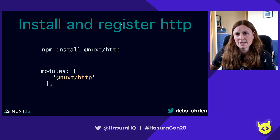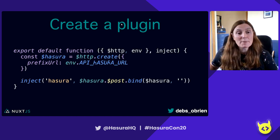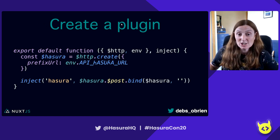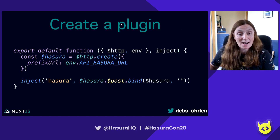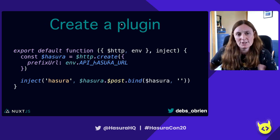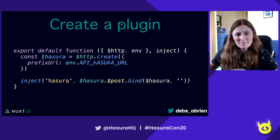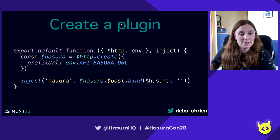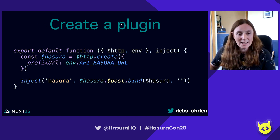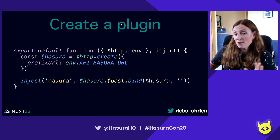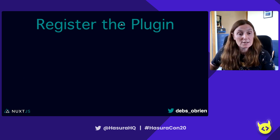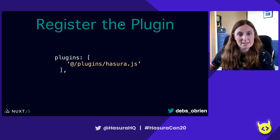I'm going to create a plugin called hasura.js. In here I'm basically exporting a function, using the HTTP that I installed through the context, and then using the inject method. I have a variable called Hasura and I'm creating it with the API Hasura URL - putting that in an env file or in my Nuxt config env variable. That's basically the API you've got from Hasura. Then I'm injecting Hasura using dollar post and bind to create that new function.